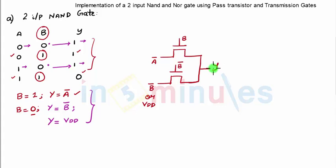Let's quickly analyze this. When B is equal to 1, B bar is 0, so this transistor is off. Y is equal to A bar. We got what we were looking at.